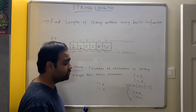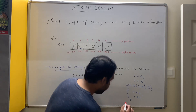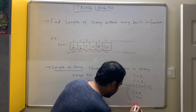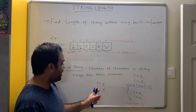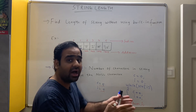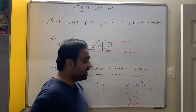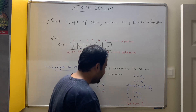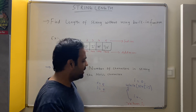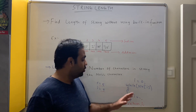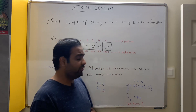In which variable is the answer stored? Answer is stored both in c and in i. Hence, what I can write is return c, or I can say return i because the value of i is equal to c — i and c are moving with the same pace. If I am saying return i, there is no need of c. This becomes the loop to find the length of the string without using the built-in function.